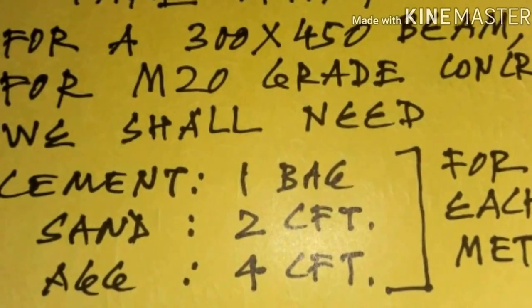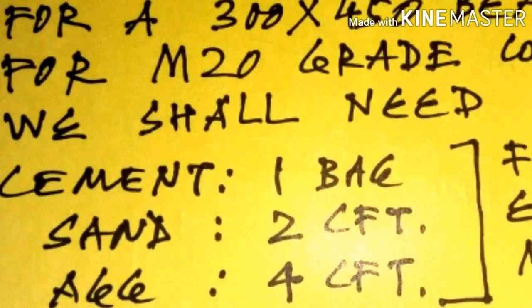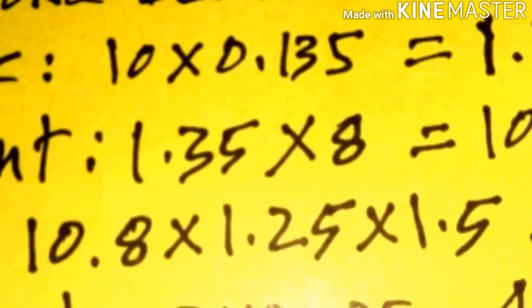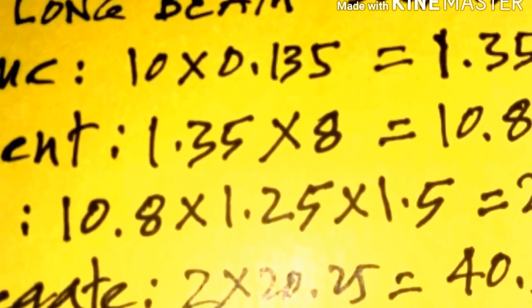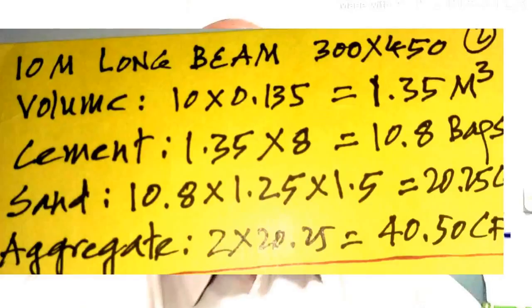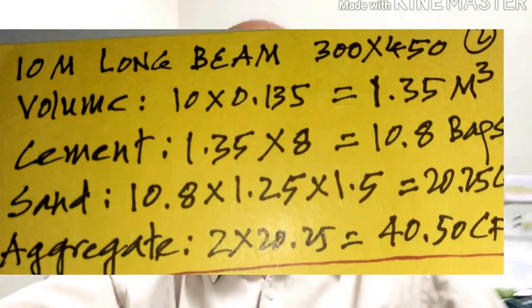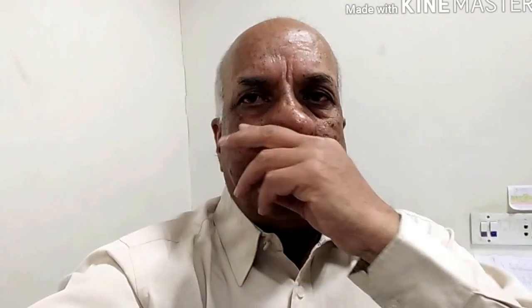You must be wondering how all this has come — just watch the calculations coming up. Now suppose you are standing on a site where the total length of the beams of size 300 by 450 is 50 meters. So what will be the material requirement?